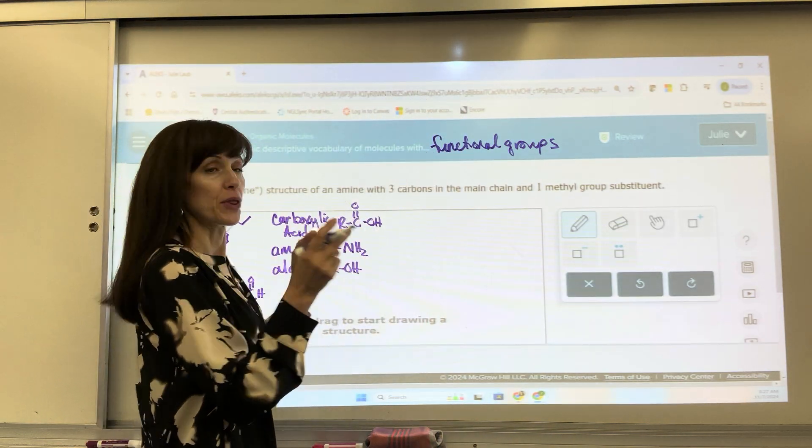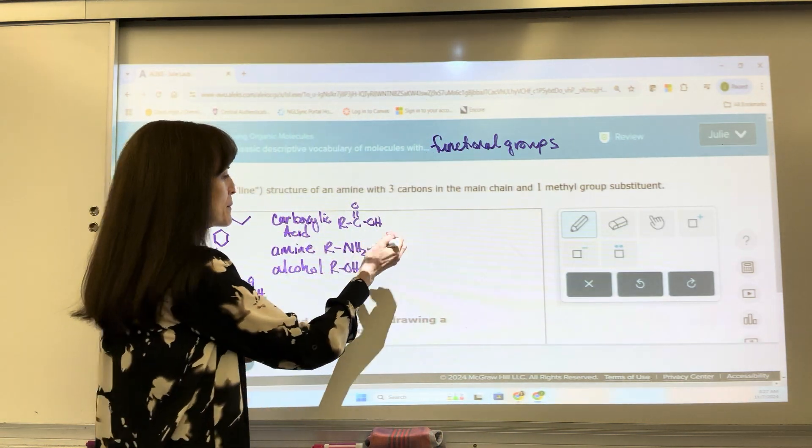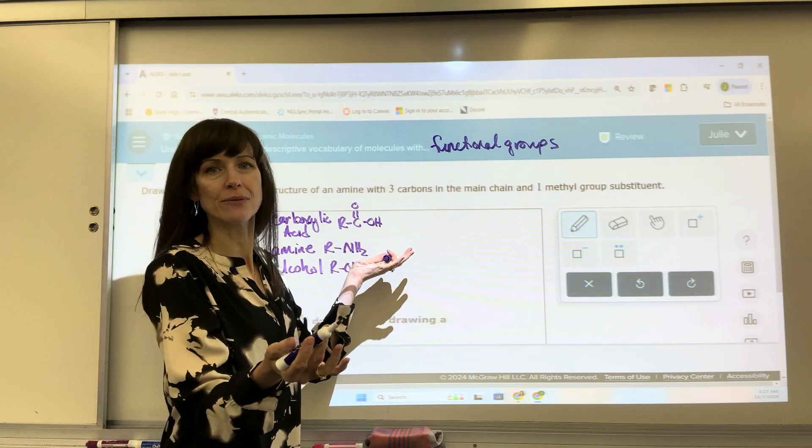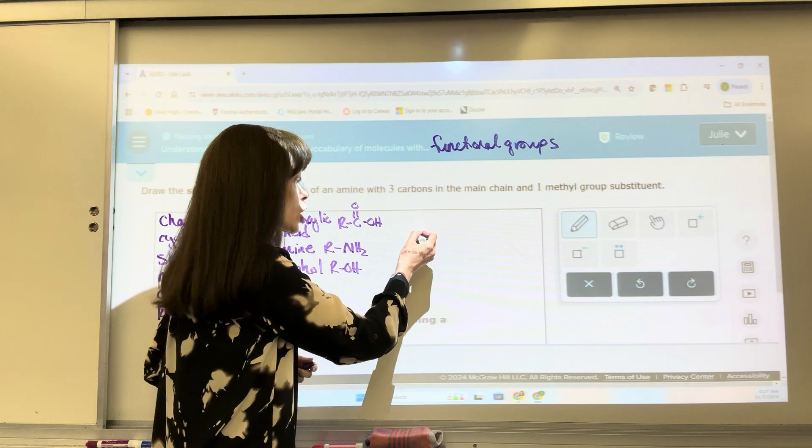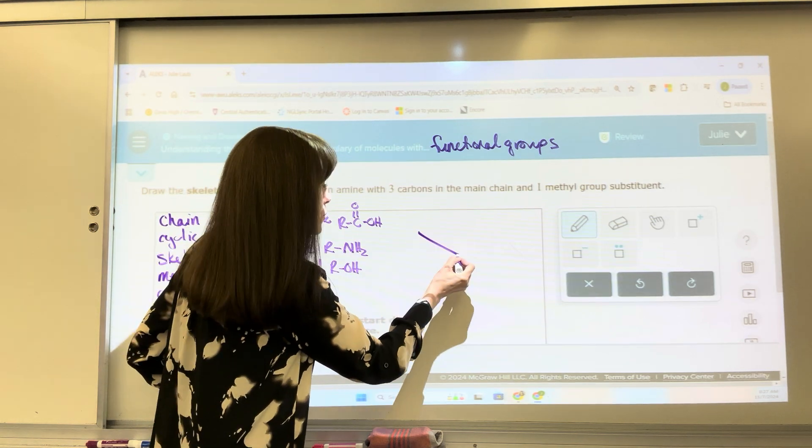Okay, so this three carbons, that's where I'm going to start for my main chain. This time I'm going to go down. It doesn't matter. I touch my board, touch the paper. That's carbon one, two, three.